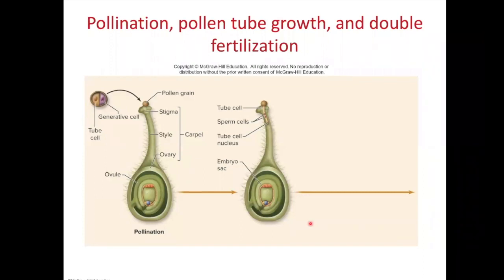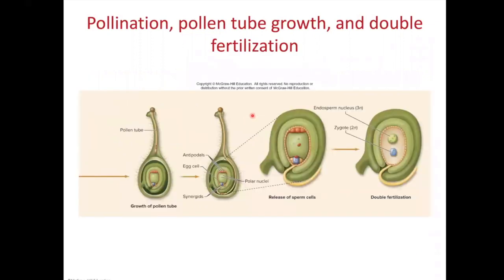Now let's get to the process of bringing together the sperm and eggs. The first thing that has to happen is pollination — the pollen grain landing on the receptive stigma of the appropriate species. Once pollination has occurred, the pollen grain is activated and starts growing. The pollen tube grows down through the style, its growth directed by the tube cell nucleus. The sperm cell has divided, so now we've got two identical sperm cells traveling along with the tube cell nucleus as the pollen tube grows. The pollen tube finds the ovule, grows through an opening, and discharges the two sperm cells.